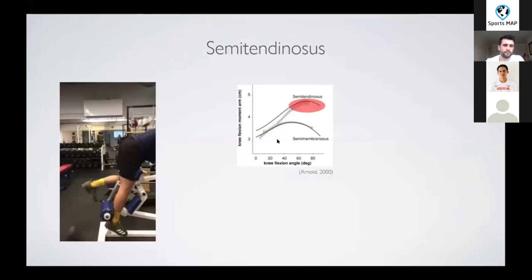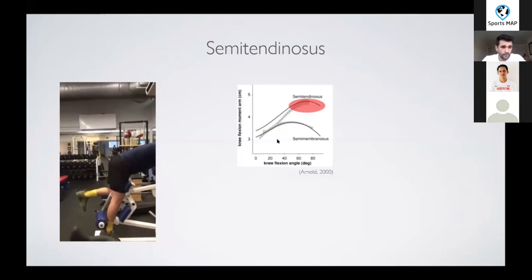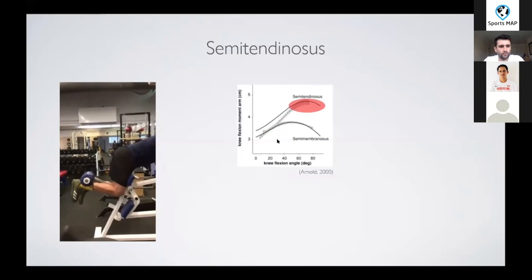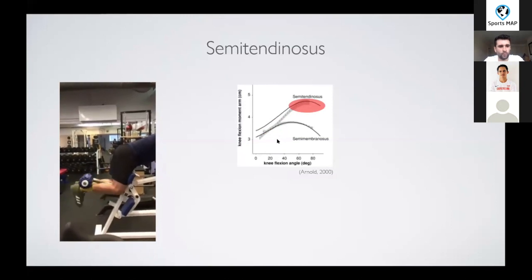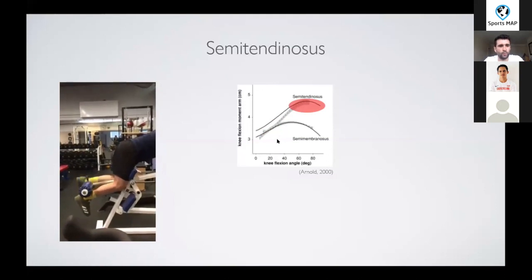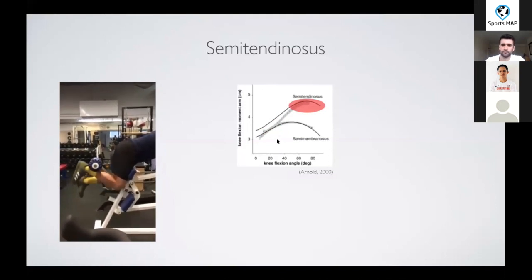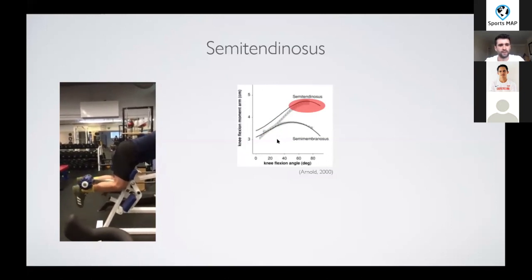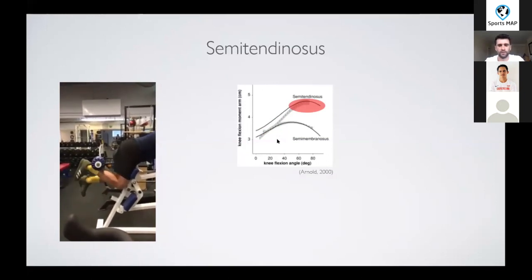So what we can look at then is do some slower reps and focus the tension on where that contribution from the tendinosus is going to be largest, where that moment arm is largest. And then hopefully if we increase the time under tension on the semi-tendinosus, we're more likely to achieve that mechanotransduction.